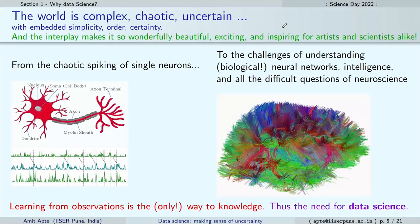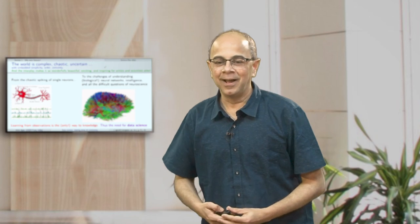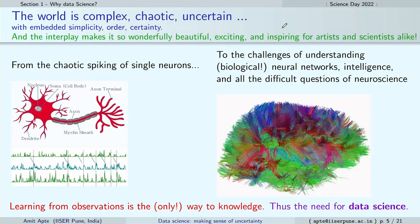Chaos occurs in many places. For example, even a single neuron is in fact chaotic. Take millions to trillions of such neurons and put them together — that is what is supposed to be in my head, I am told. That is a biological network of neurons, a very complex system with very difficult questions: what exactly is brain function? What is intelligence? It is a philosophically, scientifically, and conceptually very difficult question.